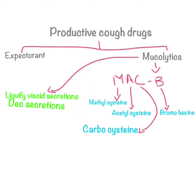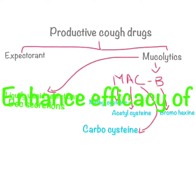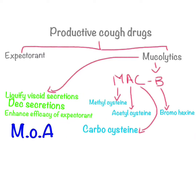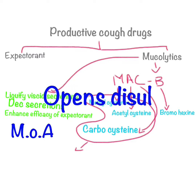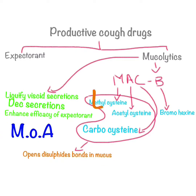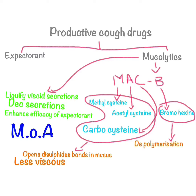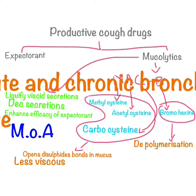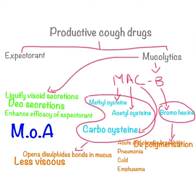Methylcysteine, acetylcysteine, and carbocysteine work by splitting the sulfhydryl group, opening the disulfide bonds that maintain mucus viscosity and reducing it. The most common drug is acetylcysteine. Its adverse effects include nausea, vomiting, and inflammation of the oral mucosa. Bromhexine also reduces viscosity but through depolymerization of mucopolysaccharides in the ground substance. It is used clinically for acute or chronic bronchitis, pneumonia, and cold. Its adverse effects affect the CNS, GIT, skin, and mouth.